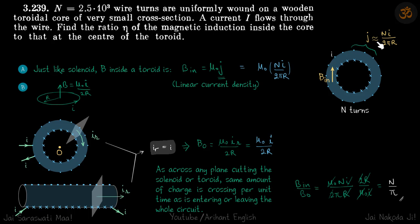Now this is approximately equal to ni by 2πr. See, total turns are n and total length is 2πr. So number of turns by 2πr times i is the current crossing per unit length. So ni is the total current on the periphery and 2πr is the length of the periphery. So current density is total current ni divided by length of the periphery which is 2πr.